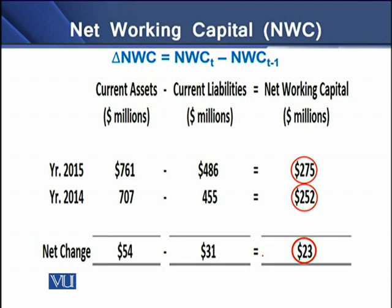There is a difference between net working capital and cash flows — both may not be the same. For example, if a firm sells its inventory in cash, there is a cash flow to the firm, but there is no change in the current assets. So there would be no change in the net working capital. It is important to understand the difference between net working capital and cash flows.